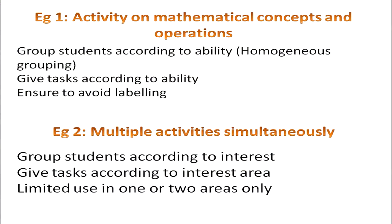In this kind of grouping, we must ensure that labeling is avoided. Another example is when we want to do multiple activities simultaneously. In such a case, we can group students according to their interest and assign them tasks in their interest area. However, this has limited use and can be applied only in areas like art and craft, clay modeling, dance, singing, etc.